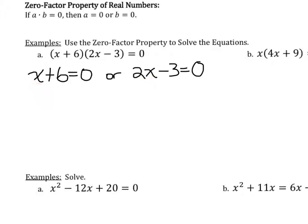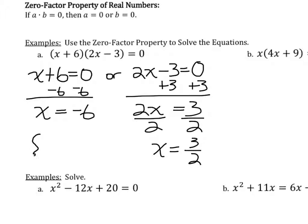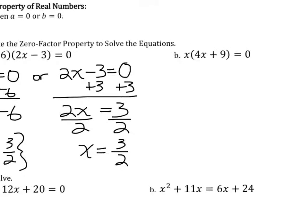Both equations are linear because the exponent on the variable is 1 in each case, and we already know the process of solving linear equations. I'm going to subtract 6 from both sides and get x equals negative 6. For the other equation, I add 3 to both sides to cancel out the minus 3, getting 2x equals 3, then divide both sides by 2 to get x equals 3 halves. So my solution set, written in the curly brackets, includes negative 6 and 3 halves. That's using our zero factor property to solve these types of equations.